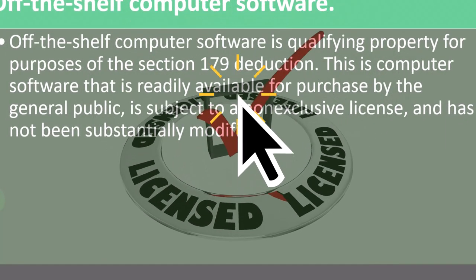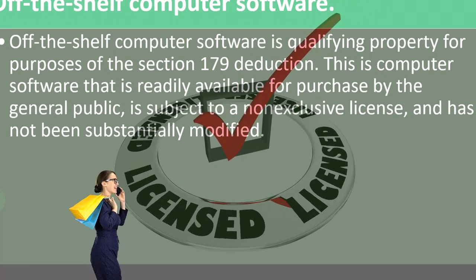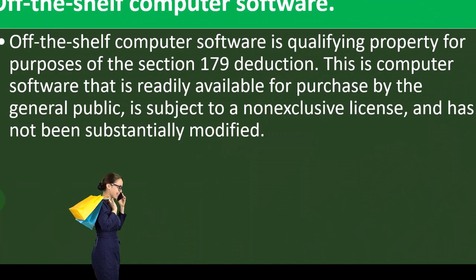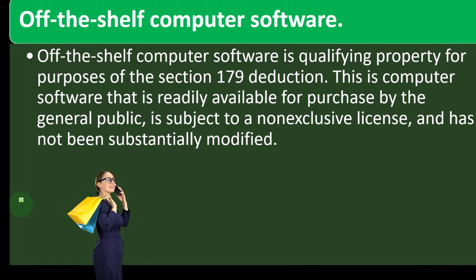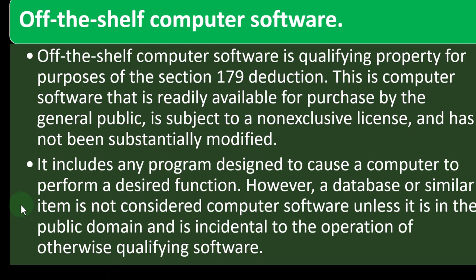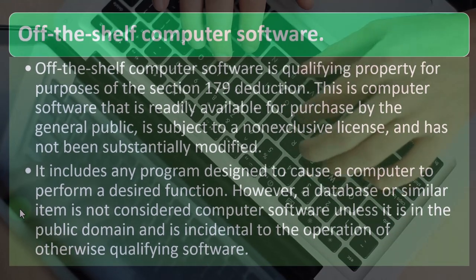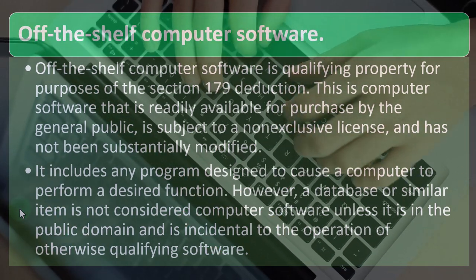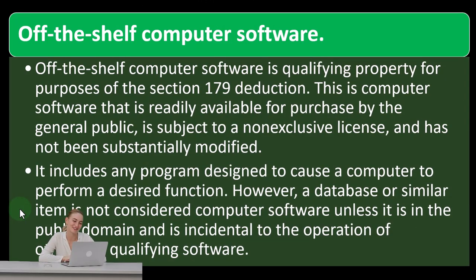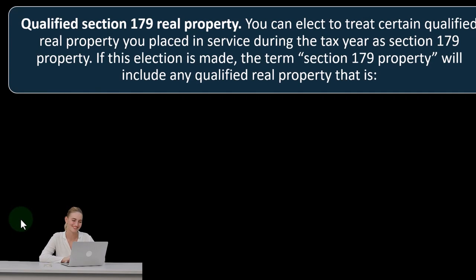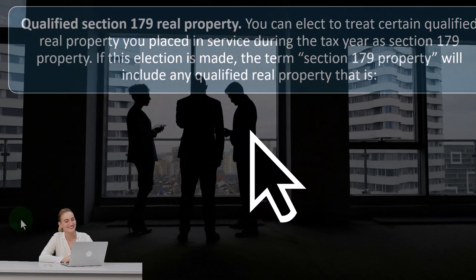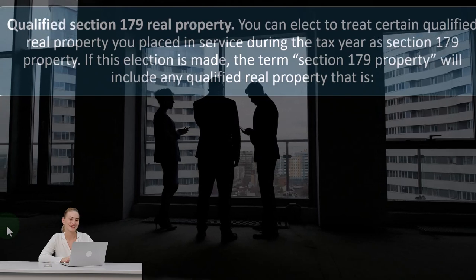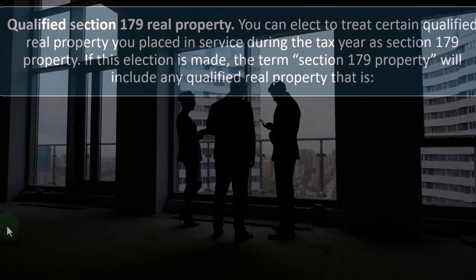Software becomes an issue because the question is: did you just buy off-the-shelf software, or is it research and development — something created internally? That changes the treatment of how you're going to be accounting for the software. It includes any program designed to cause a computer to perform a desired function. However, a database or similar item is not considered computer software unless it is in the public domain and is incidental to the operation of otherwise qualifying software. So qualified Section 179 real property: you can elect to treat certain qualified real property placed in service during the tax year as Section 179 property. If this election is made, the term 'Section 179 property' will include any qualified real property.